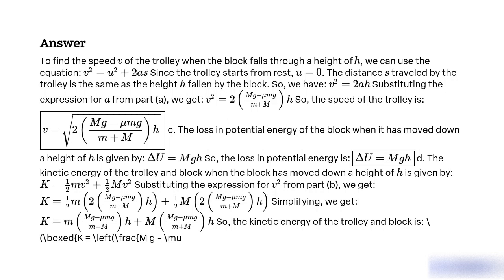So the speed of the trolley is v equals the square root of 2(mg minus mu MG) divided by (M plus m) times h. The loss in potential energy of the block when it has moved down a height h is given by delta U equals mgh.